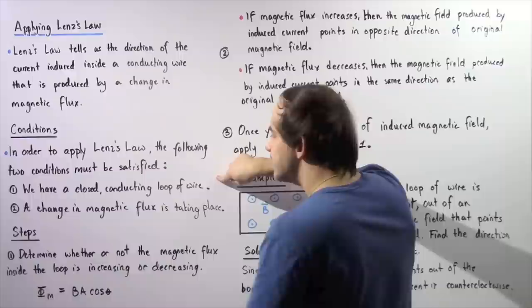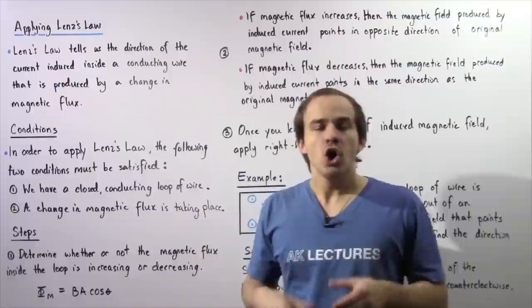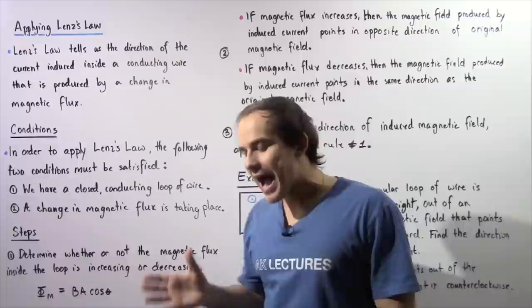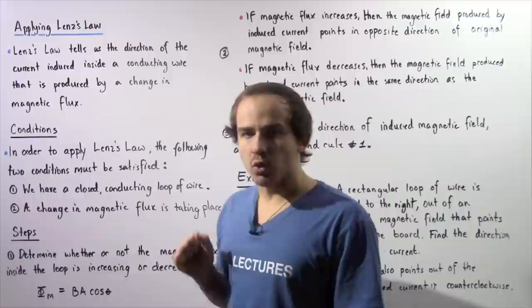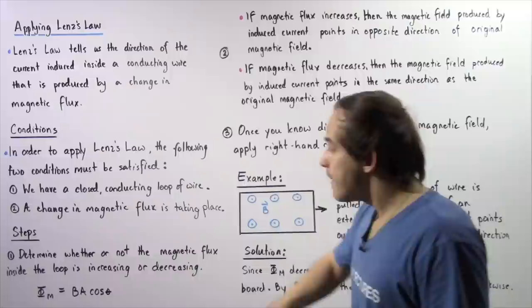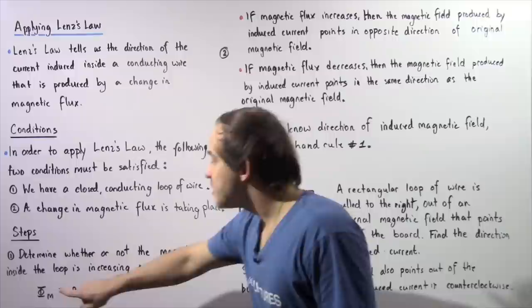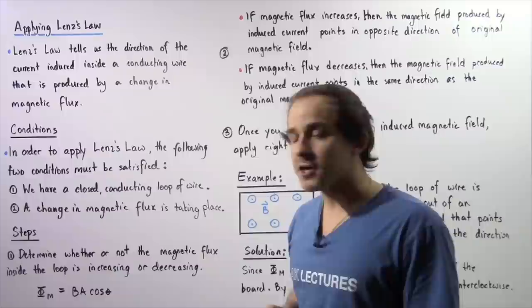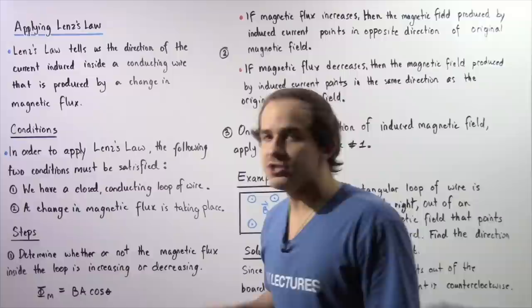Assuming these two conditions are satisfied, let's examine the three steps for applying Lenz's Law. Step one: determine whether the magnetic flux inside the loop is increasing or decreasing using the equation — magnetic flux equals the product of the magnitude of the magnetic field B, the area A of the loop, and the cosine of the angle theta between those two vectors.